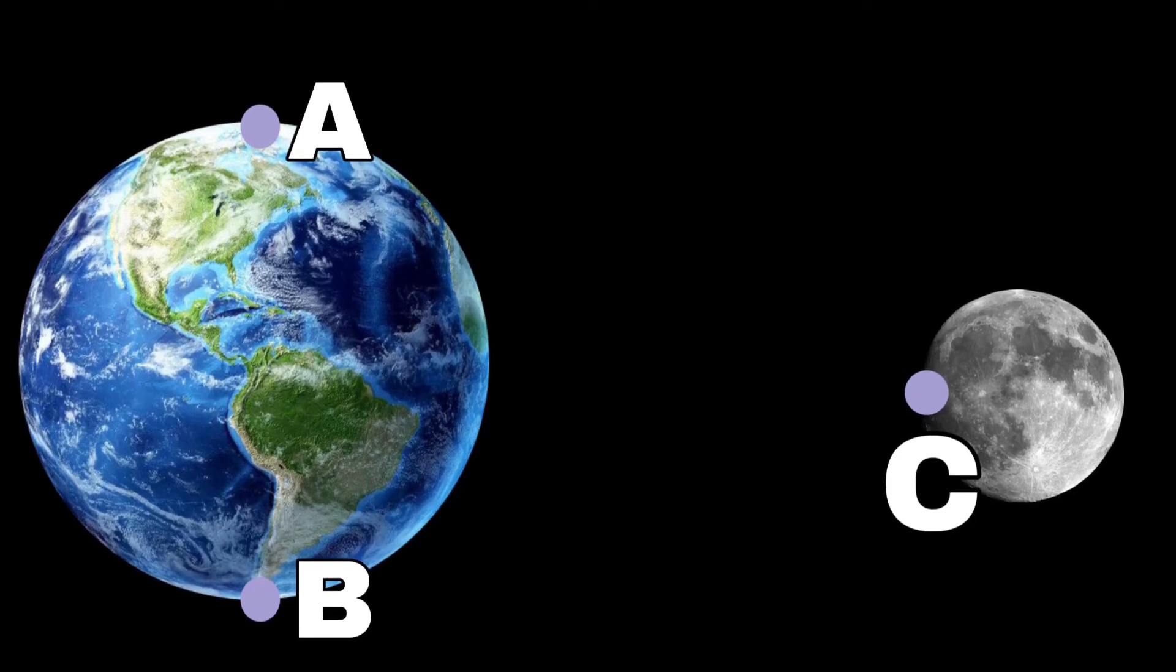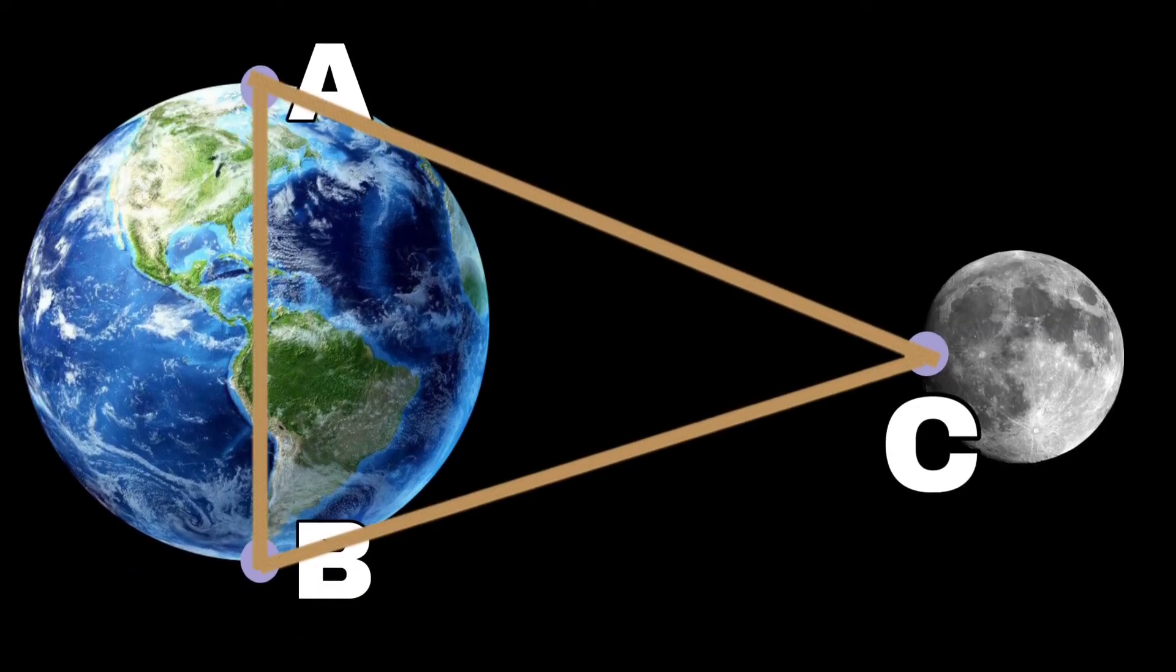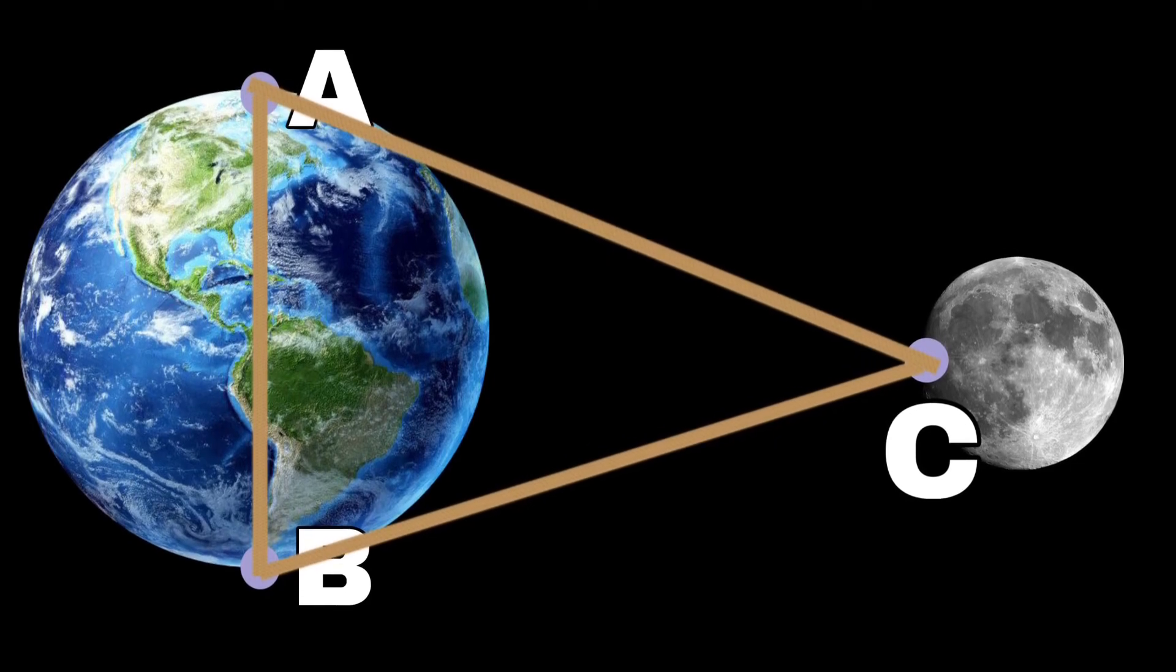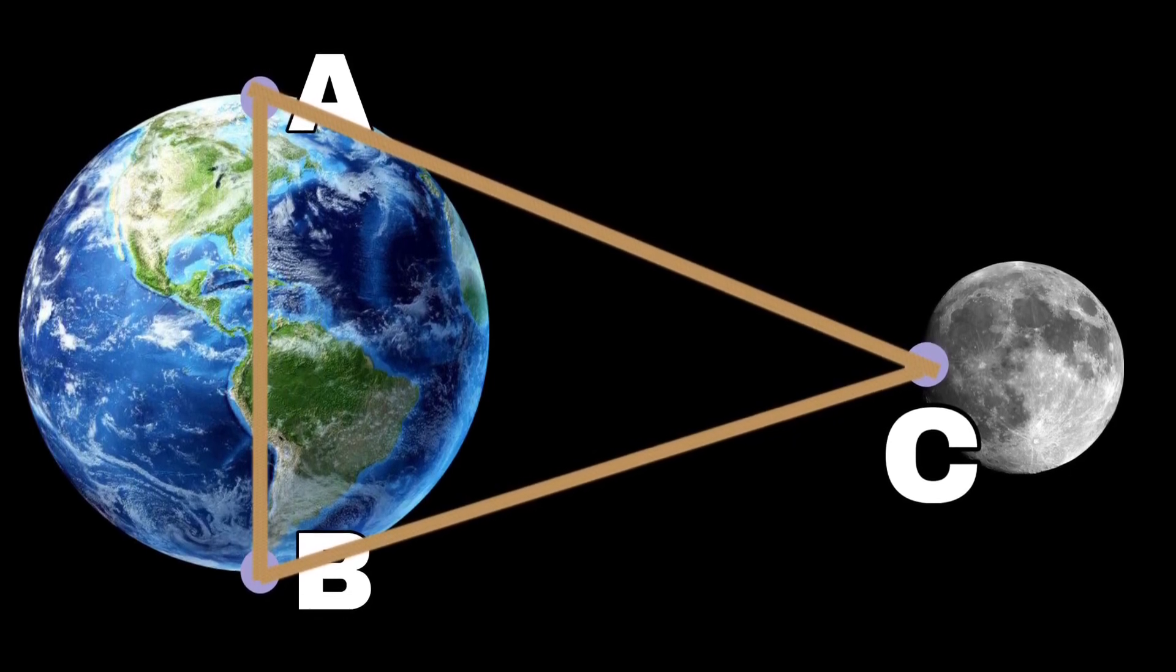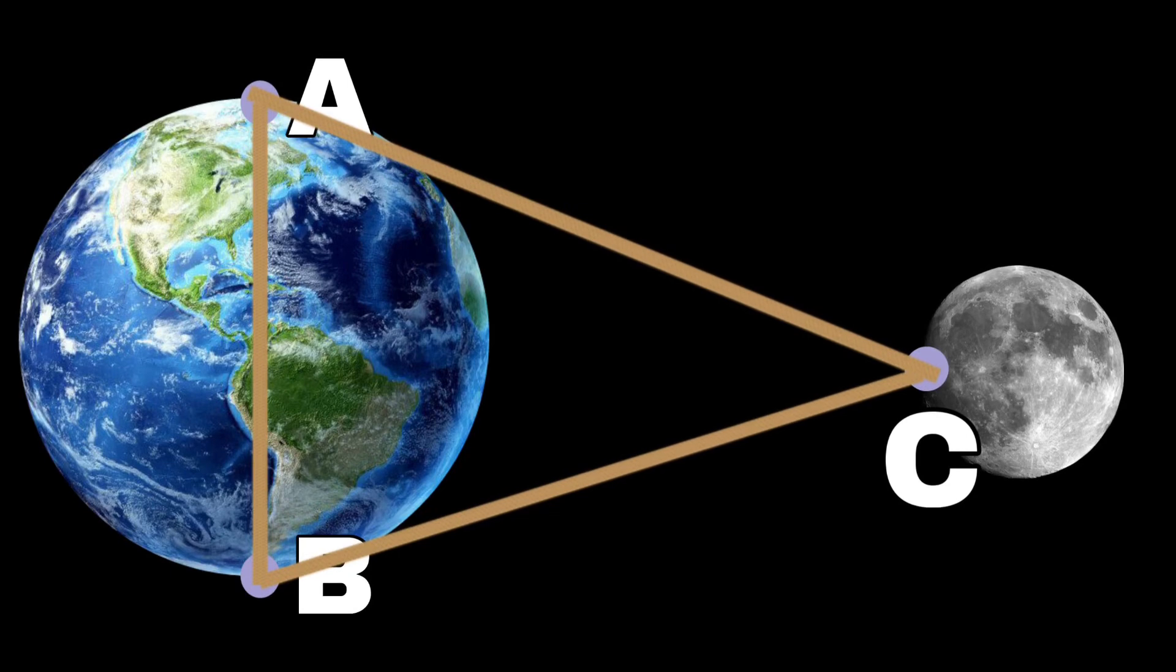Let Moon be the point C. Notice that points A, B, C had formed a triangle. In this triangle, sides AC or BC is the distance between Earth and Moon. Let this distance be D.